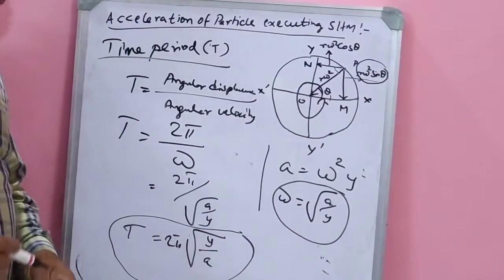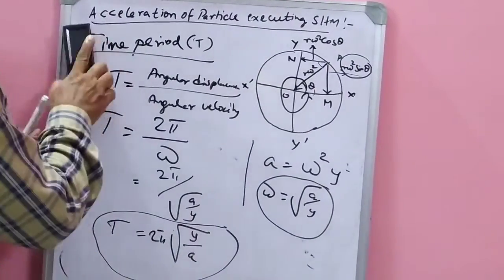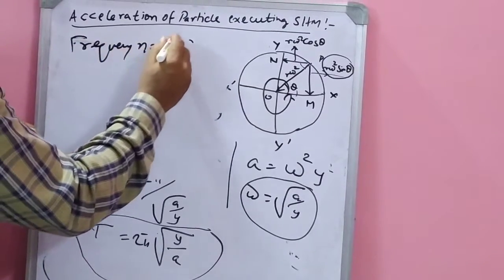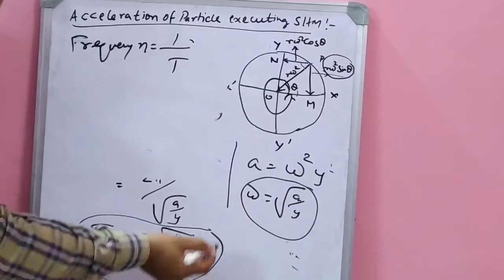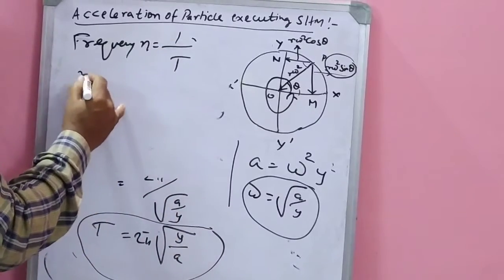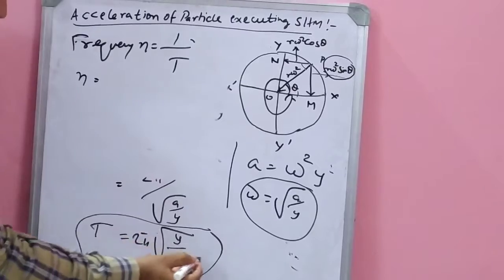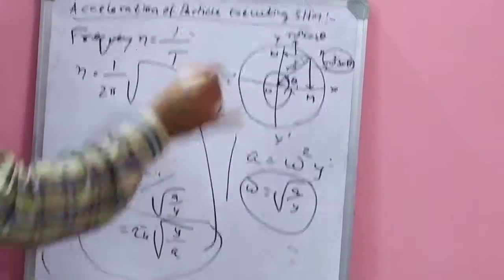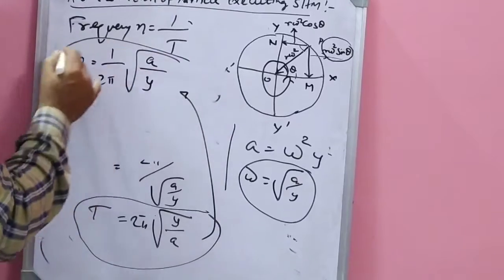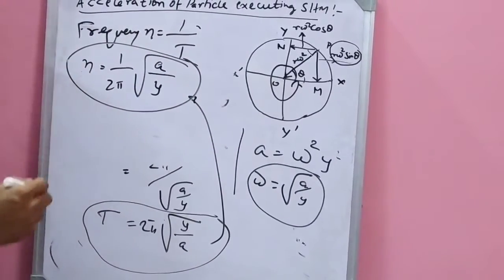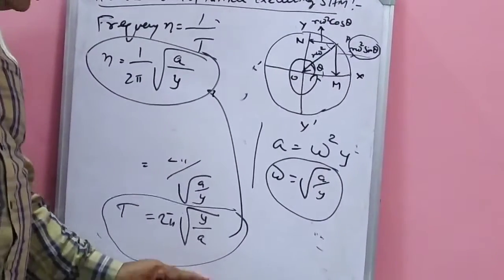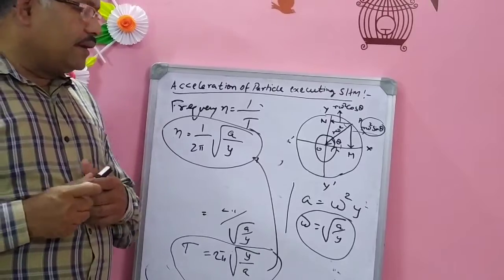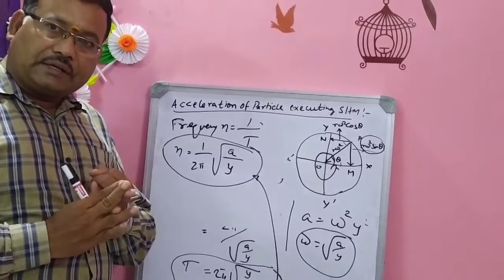Next, frequency of the particle executing SHM is easily found. Frequency n = 1/T. Taking the reciprocal of the time period expression, n = 1/(2π)·√(a/y) — that is, (1/2π)·√(acceleration/displacement). This is the expression for frequency. So from the time period it is easy to derive the frequency. We have now completed acceleration, time period, and frequency of the particle executing SHM. Thank you very much.